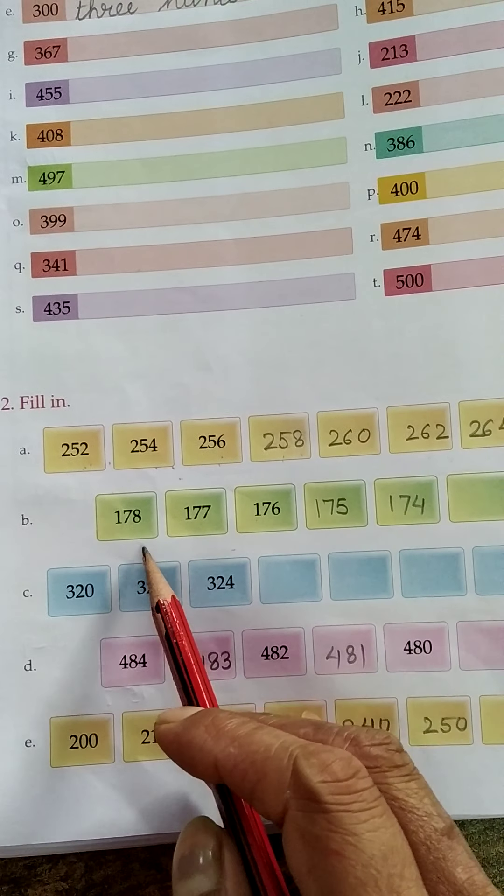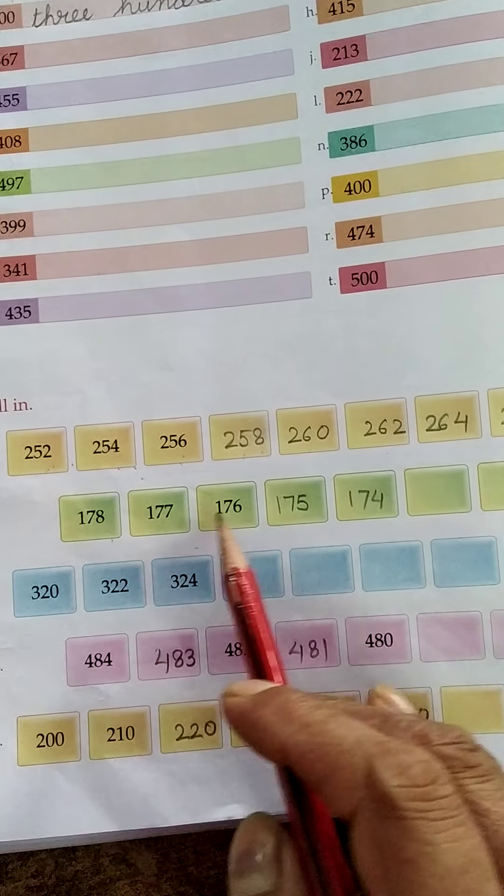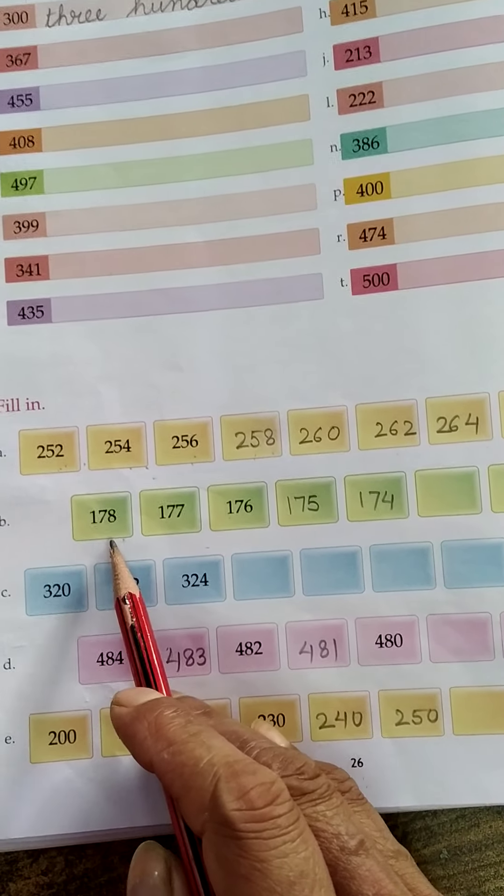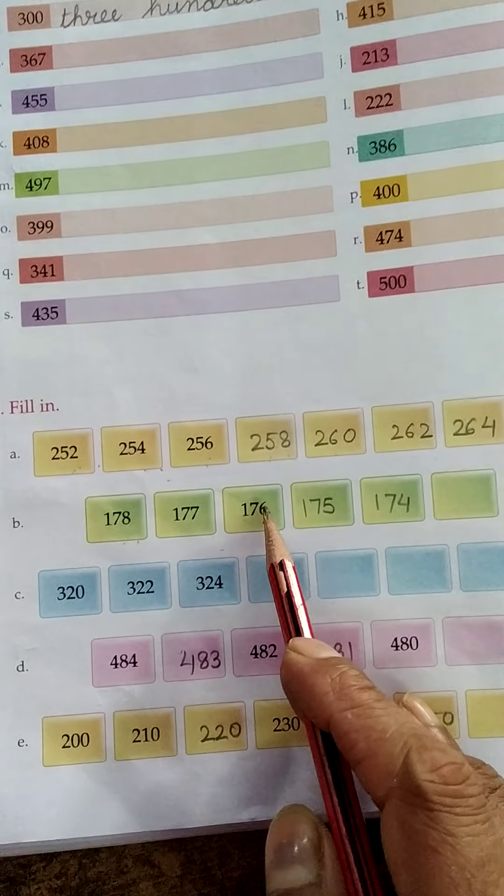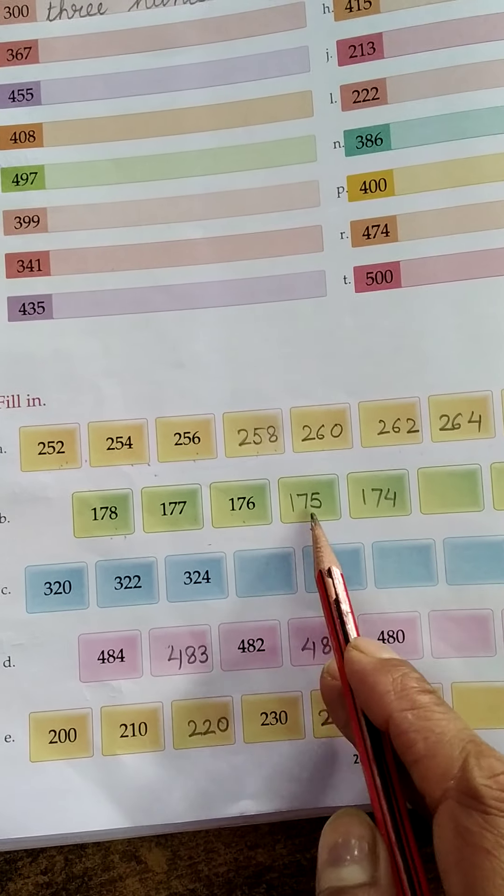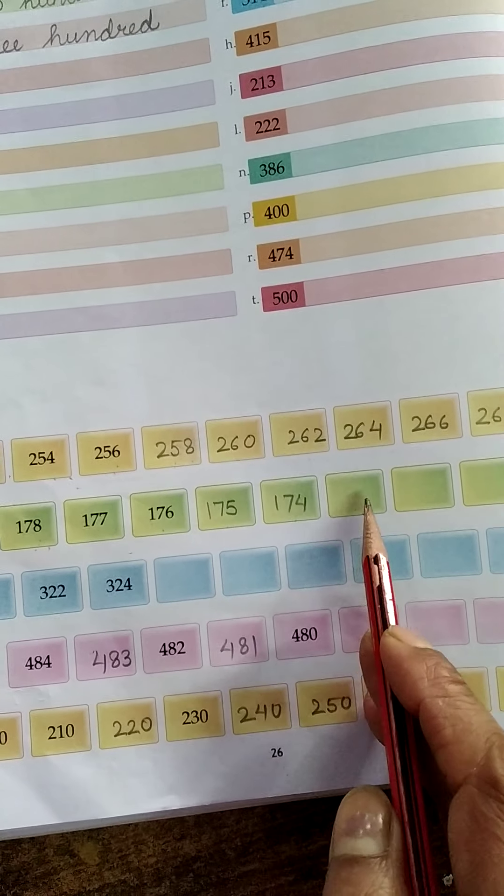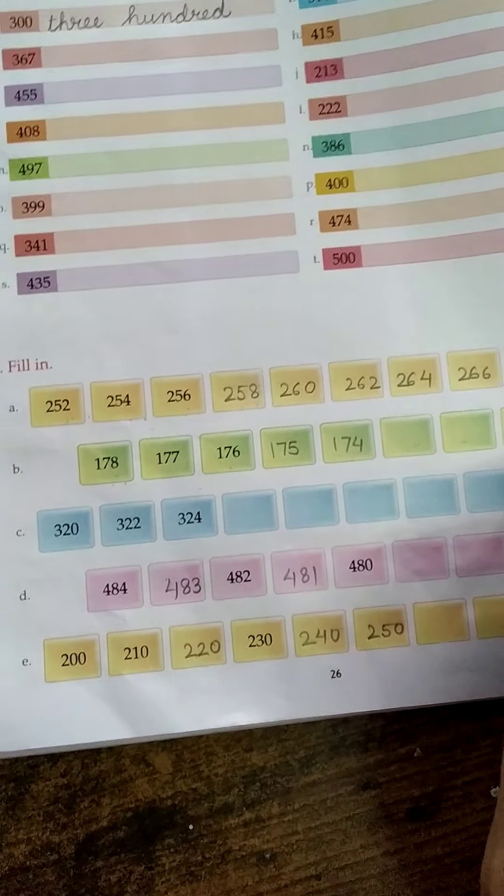Then B, 178. It is a decreasing number series, backward counting. We less one number from each number. 178, 177, 176, 175, 174. Then tell me: 173, 172, 71 and then 70.